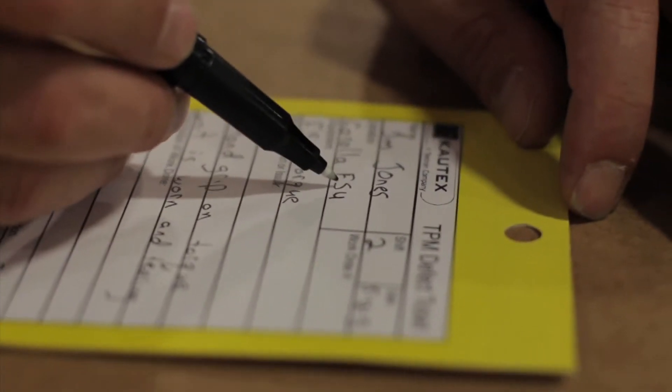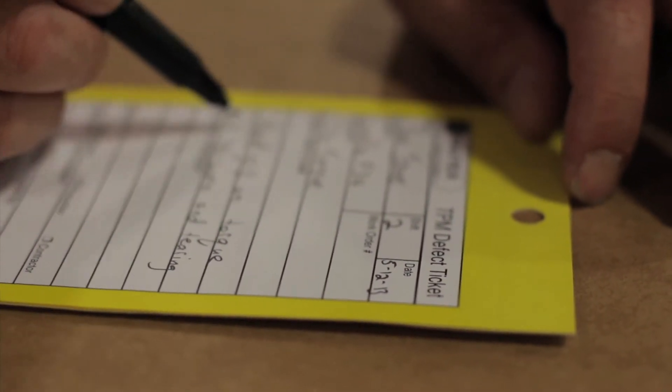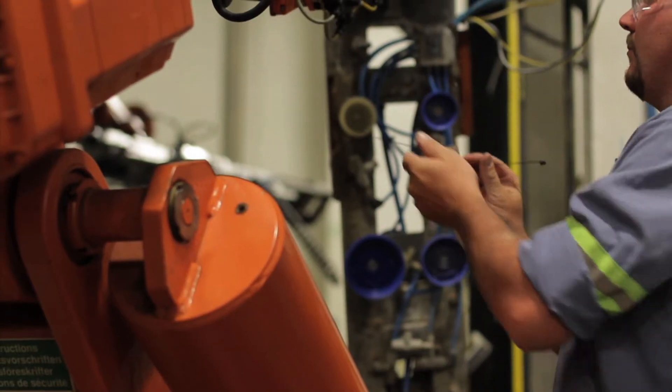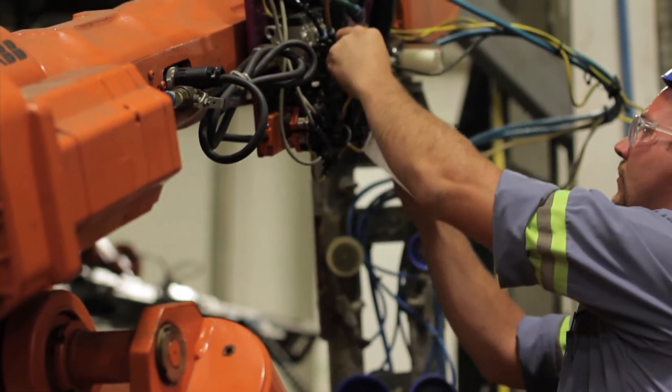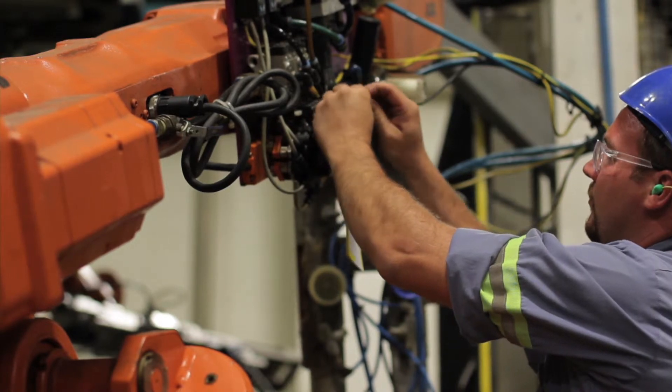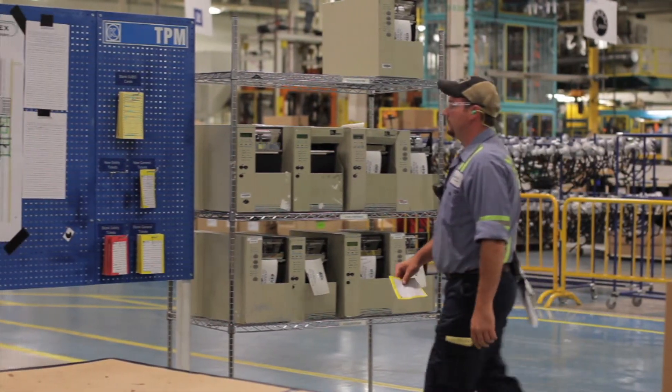When filling the ticket out, you would record the type of repair and the location. Once it's properly filled out, hang the top part of the ticket on the location where the repair needs to occur and then tear off the top copy and take it to the TPM board.